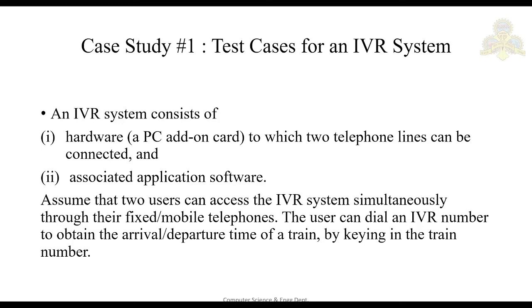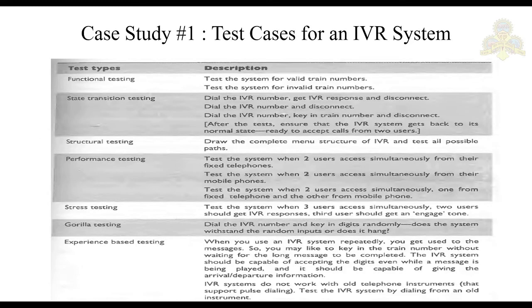The user can dial an IVR number to obtain the arrival or departure time of a train by keying in the train number. Given this requirement, how do we generate test cases? First, functional testing: design test cases to test the system for valid train numbers and for invalid train numbers. These form your functional test cases.